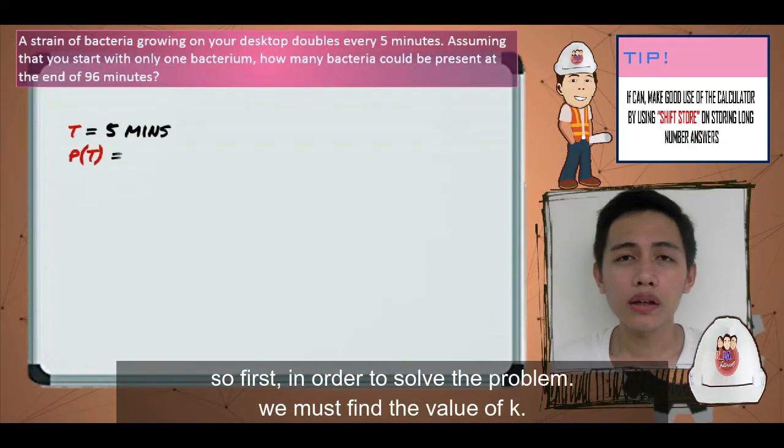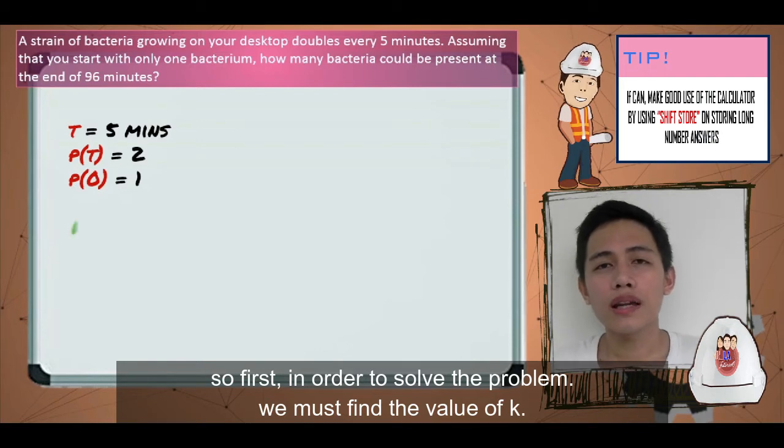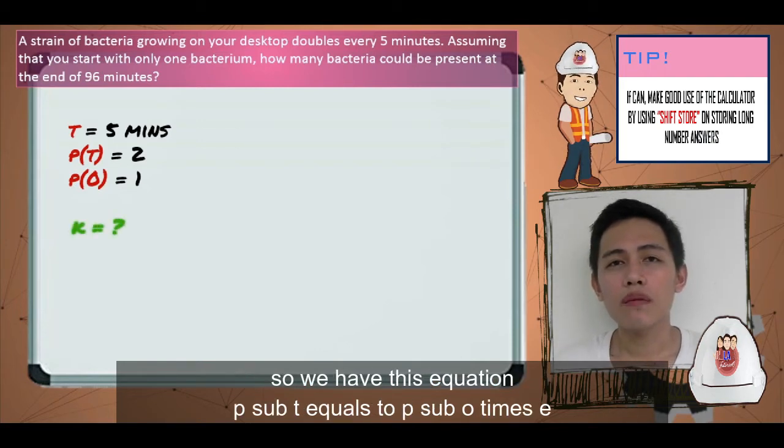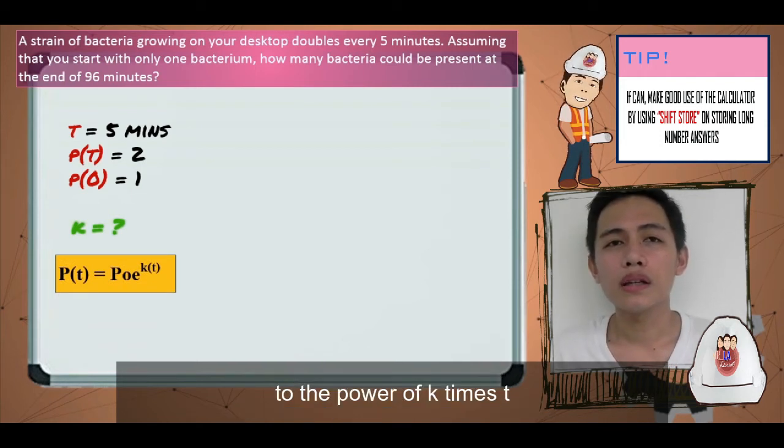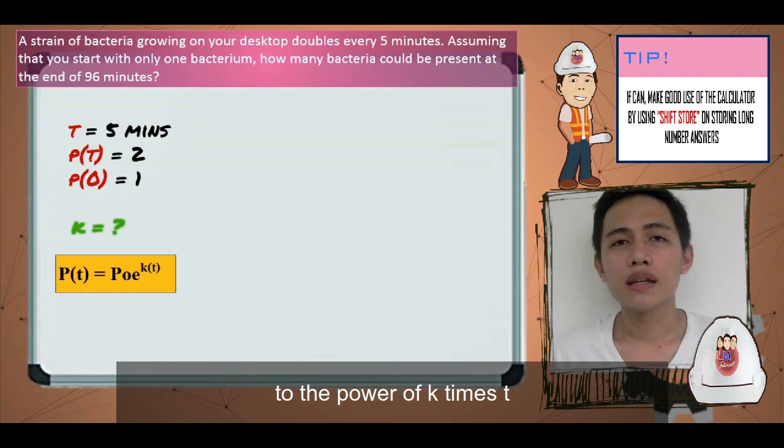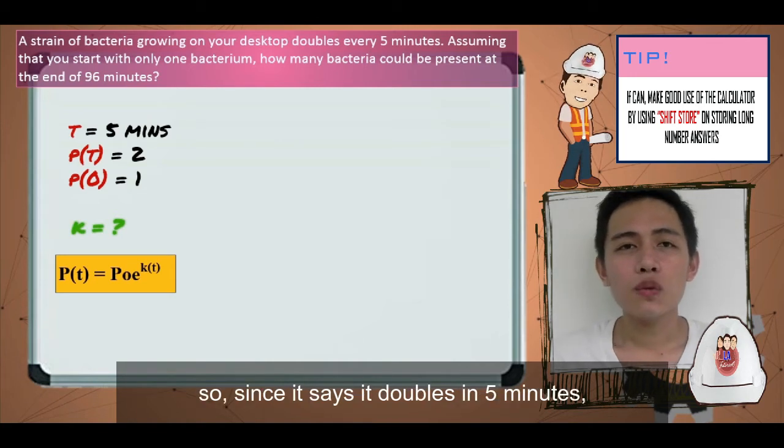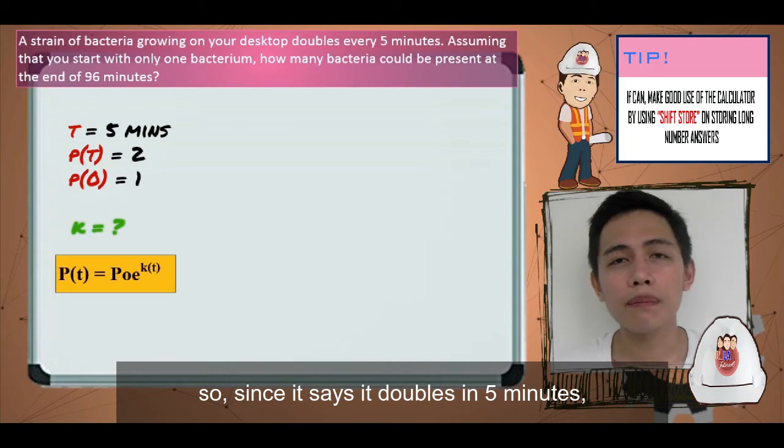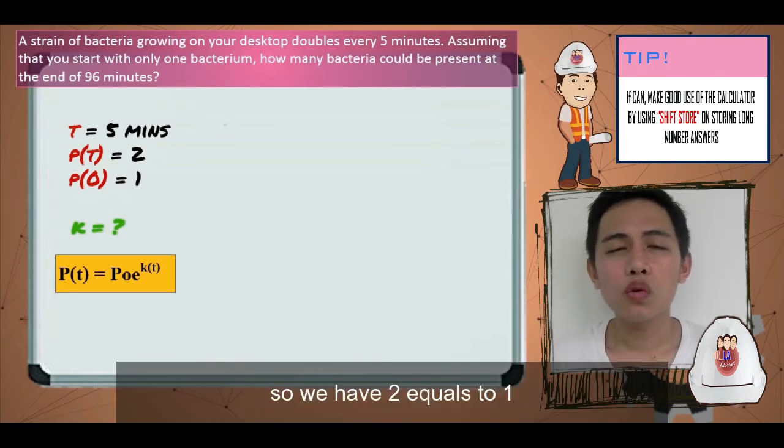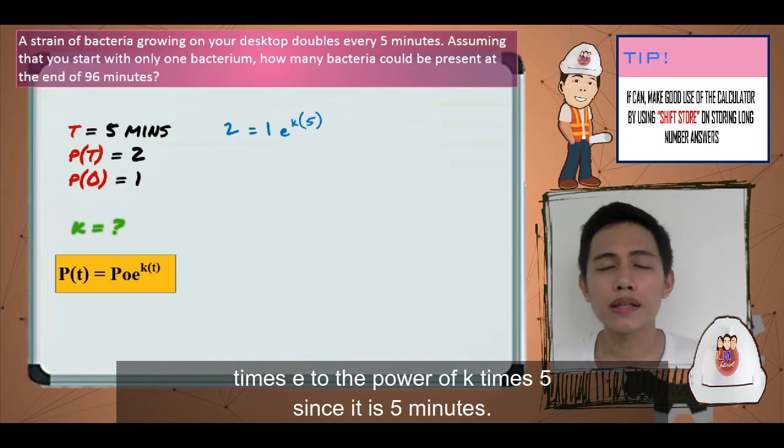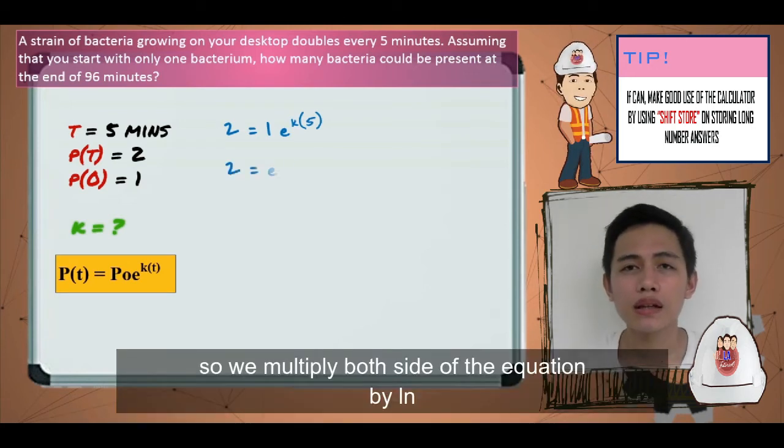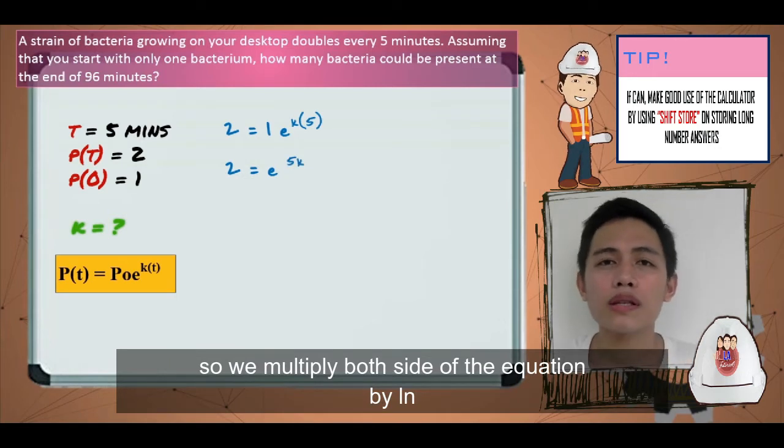First, in order to solve the problem, we must find the value of k. We have this equation: P(t) = P₀e^(kt). Since it says that it doubles in 5 minutes, we have 2 equals 1 times e to the power of k times 5. We multiply both sides of the equation by ln.